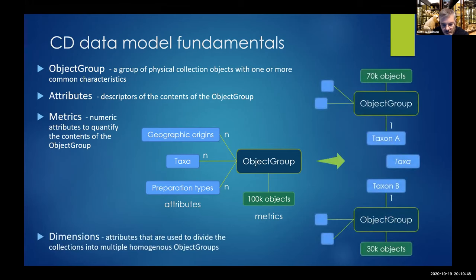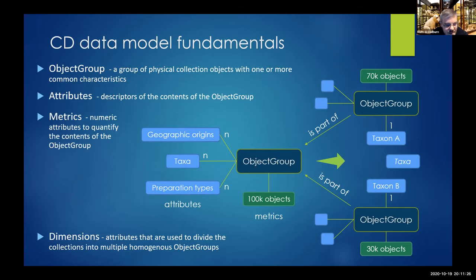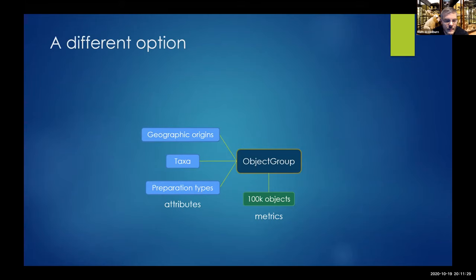You can also use one or more attributes to break down the object group into smaller sub-groups, effectively enforcing a one-to-one relationship between the object group and that attribute — for example, a taxon. Within the CD model, we call an attribute used in that way a 'dimension.' This provides a more systematic way of describing collections in smaller chunks with more detailed metrics, and you can maintain descriptions at multiple levels of granularity using parent-child or other semantic relationships.